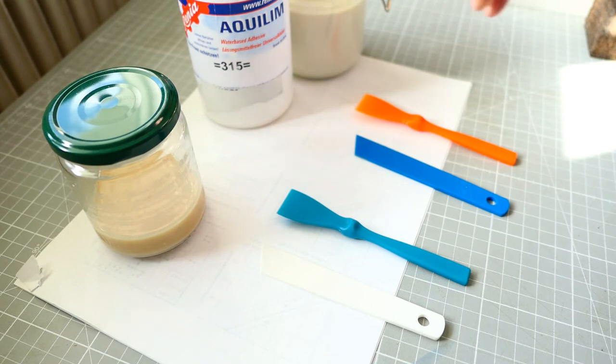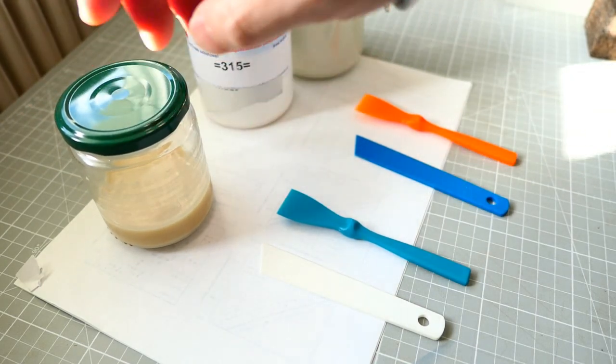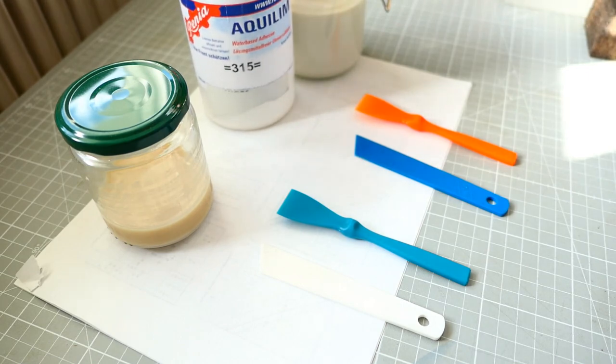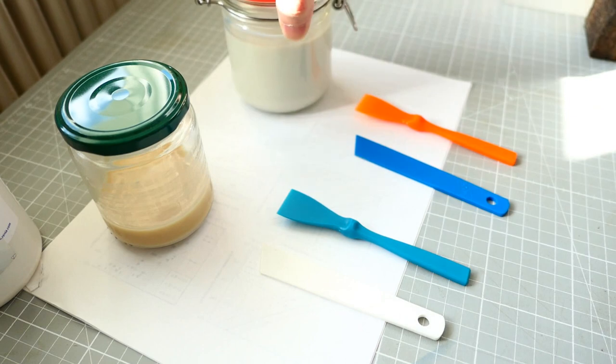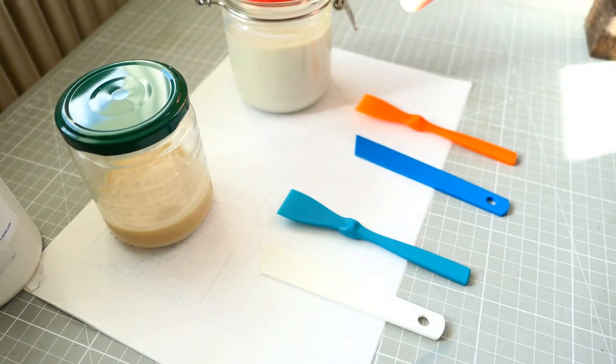So this is normal contact glue like barge cement and this is Aquilim 315. And I put this in a jar like this, in this glass jar. I will put it in the comment box or description where you can buy this specific jar, I got it from Amazon.